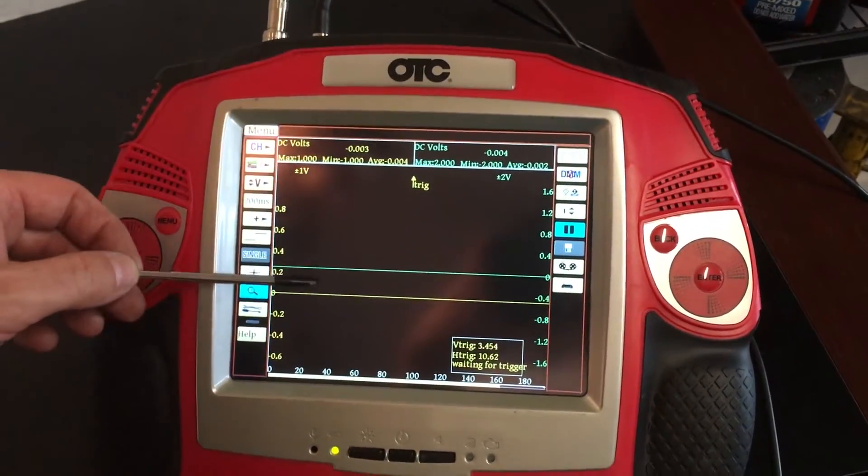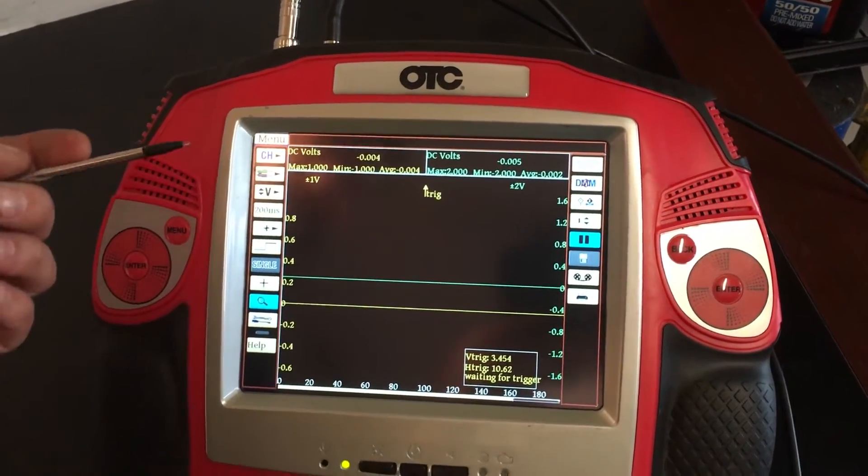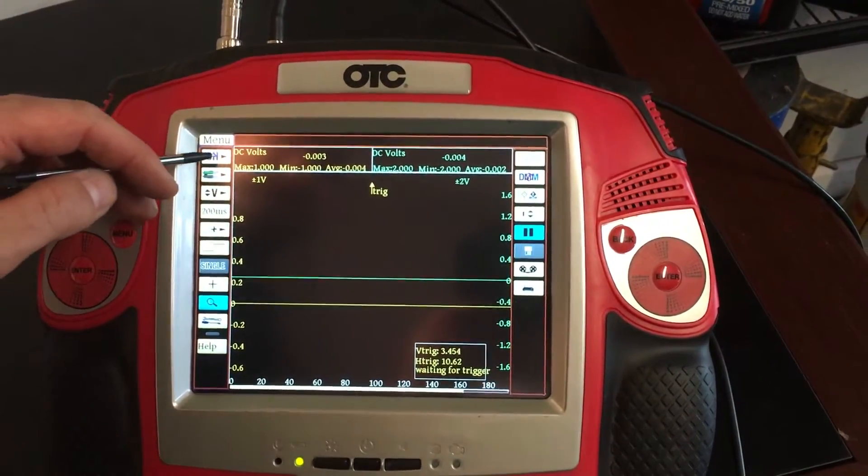Yellow channel is going to be the original sensor. The green channel is going to be the homemade sensor. So when you make your settings on your oscilloscope, on the channels,